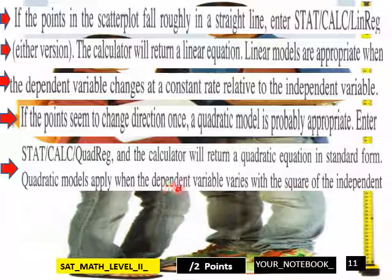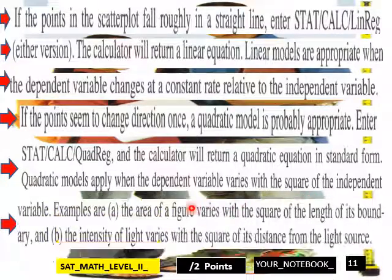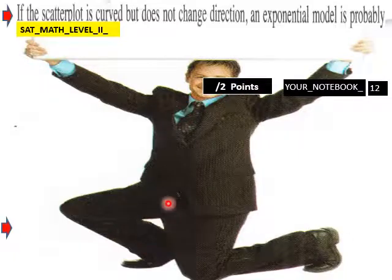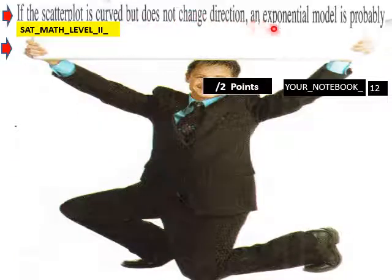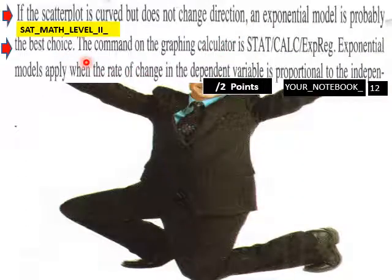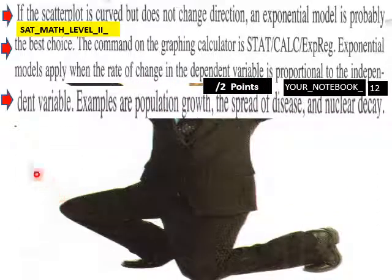Quadratic models apply when the dependent variable varies with the square of the independent variable. Examples are a, the area of a figure varies with the square of the length of its boundary and b, the intensity of light varies with the square of its distance from the light source. If the scatter plot is curved but does not change direction, an exponential model is probably the best choice. The command on the graphing calculator stat calc exponential regression. Exponential models apply when the rate of change in the dependent variable is proportional to the independent variables. Examples are population growth, the spread of disease, and nuclear decay.